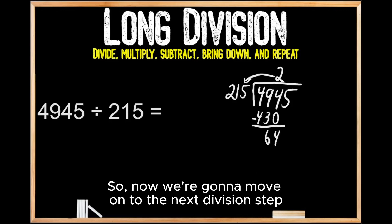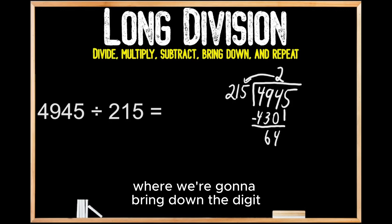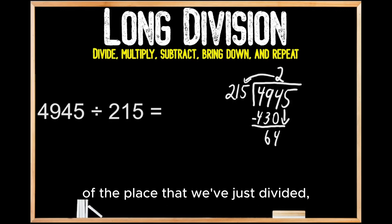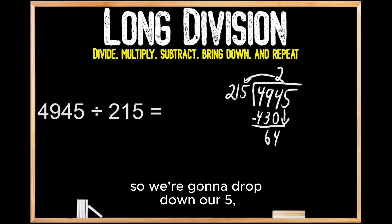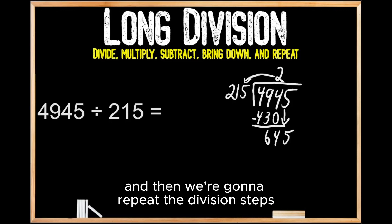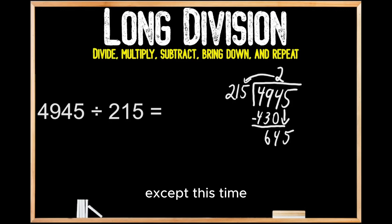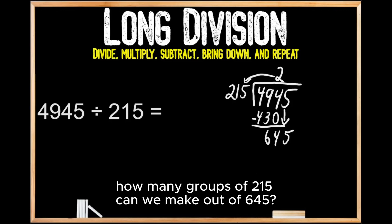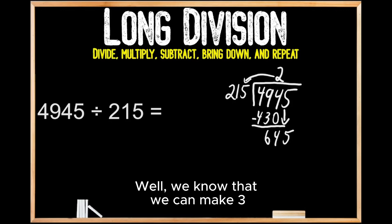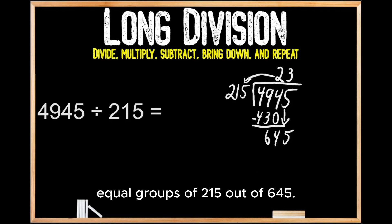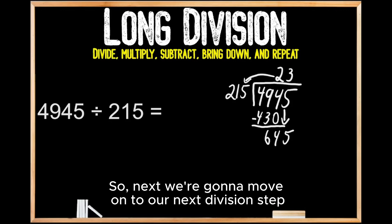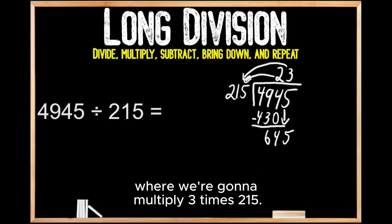Now we move on to the next division step where we bring down the digit immediately to the right of the place we've just divided. So we drop down our 5, and then we repeat the division steps. This time we're thinking: how many groups of 215 can we make out of 645? We know we can make three equal groups of 215 out of 645, so we move on to multiply 3 times 215.